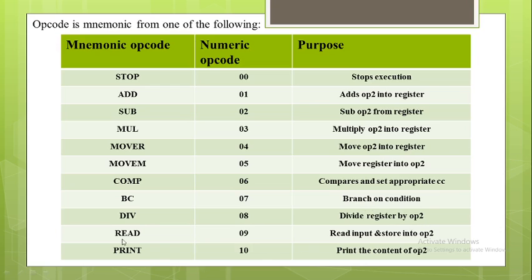READ is the mnemonic opcode corresponding to numeric opcode 09, which reads the input and stores it into operand 2. The last mnemonic opcode is PRINT, using numeric opcode 10, which prints the content of operand 2.